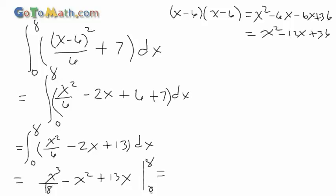So we can go ahead now. Let's define that a little better. Go ahead and plug the 8 in. So we've got 8 cubed over 18 minus 8 squared plus 13 times 8 minus. And of course, if we plug the 0 in, you get 0, 0, and 0. So everything is actually 0. All right, we'll leave it at that.